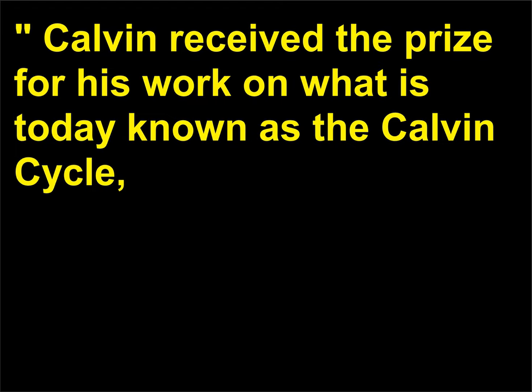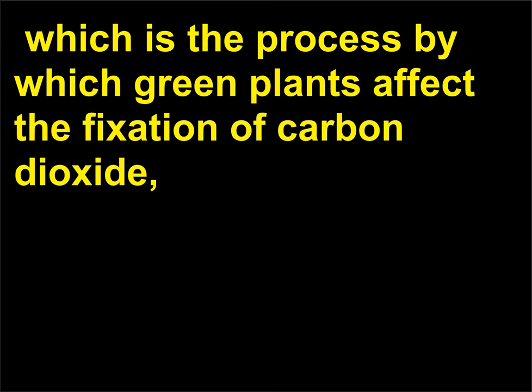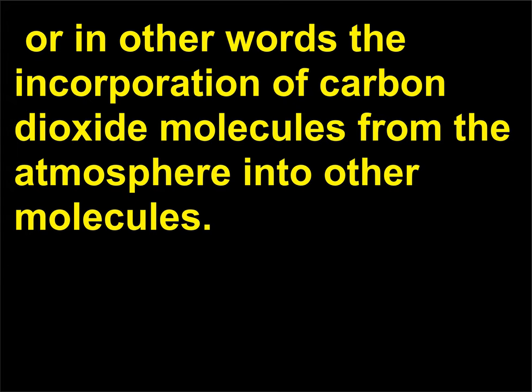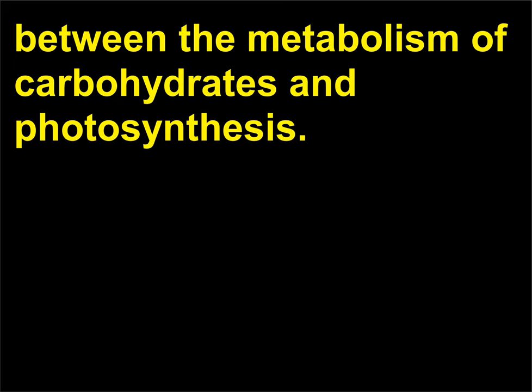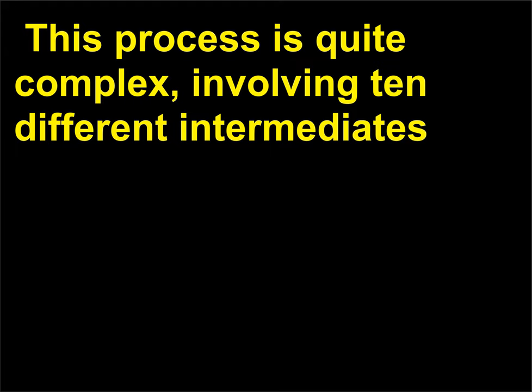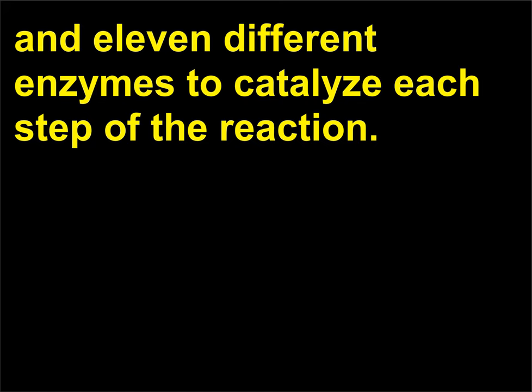Calvin received the prize for his work on what is today known as the Calvin cycle, which is the process by which green plants affect the fixation of carbon dioxide — in other words, the incorporation of carbon dioxide molecules from the atmosphere into other molecules. Calvin identified that there is a close connection between the metabolism of carbohydrates and photosynthesis. This process is quite complex, involving 10 different intermediates and 11 different enzymes to catalyze each step of the reaction.